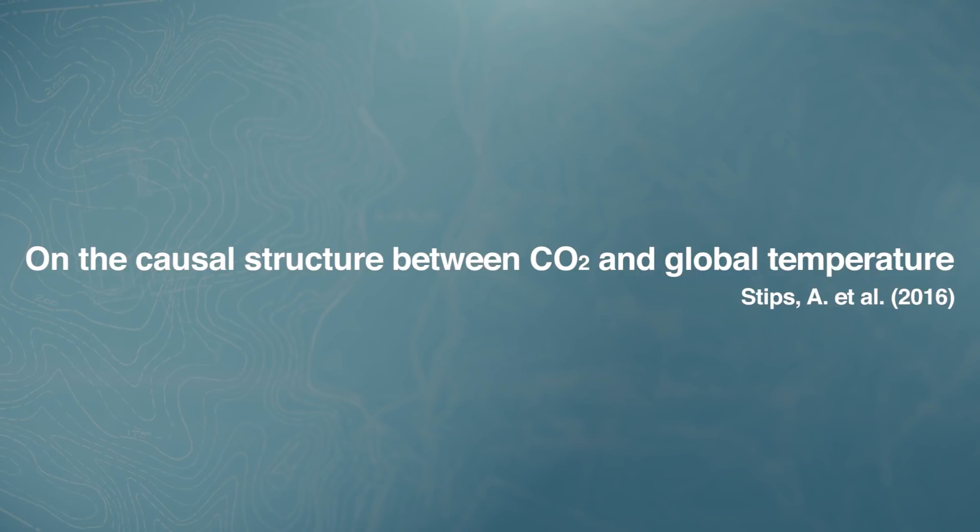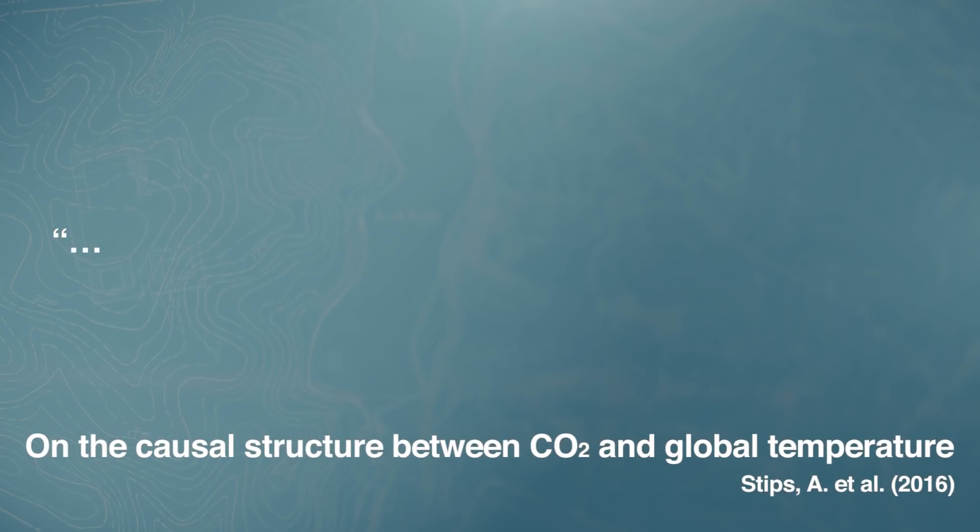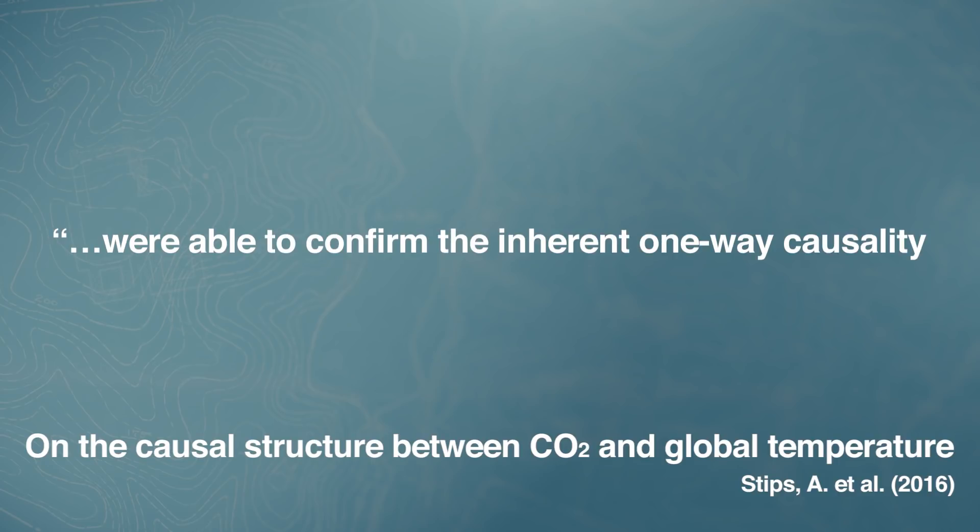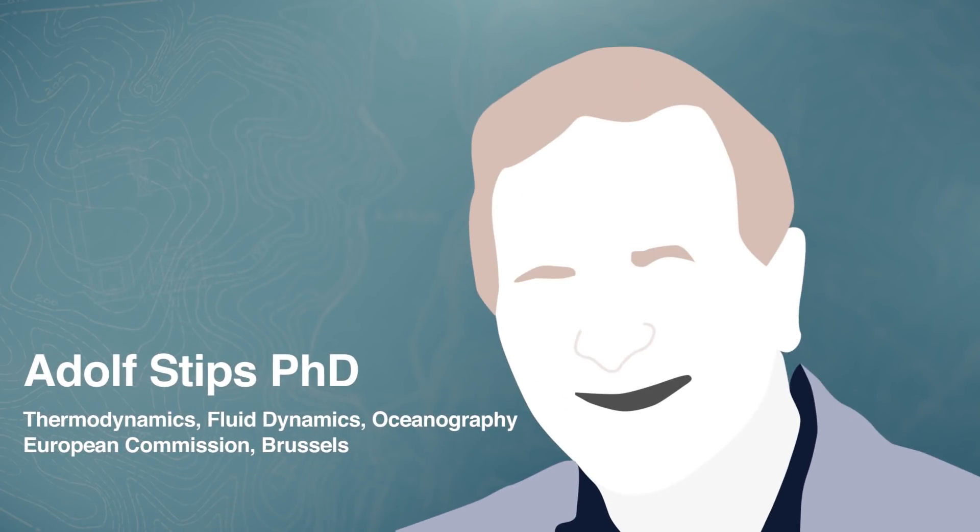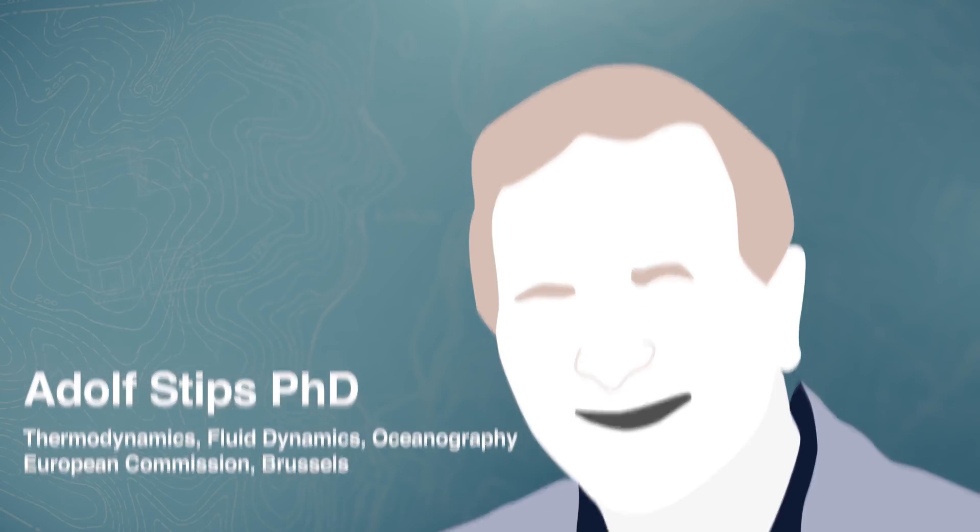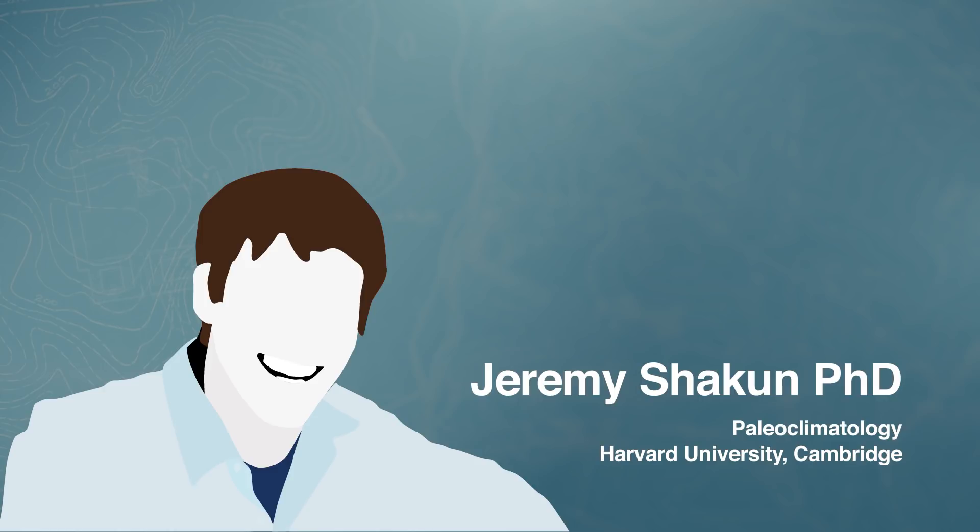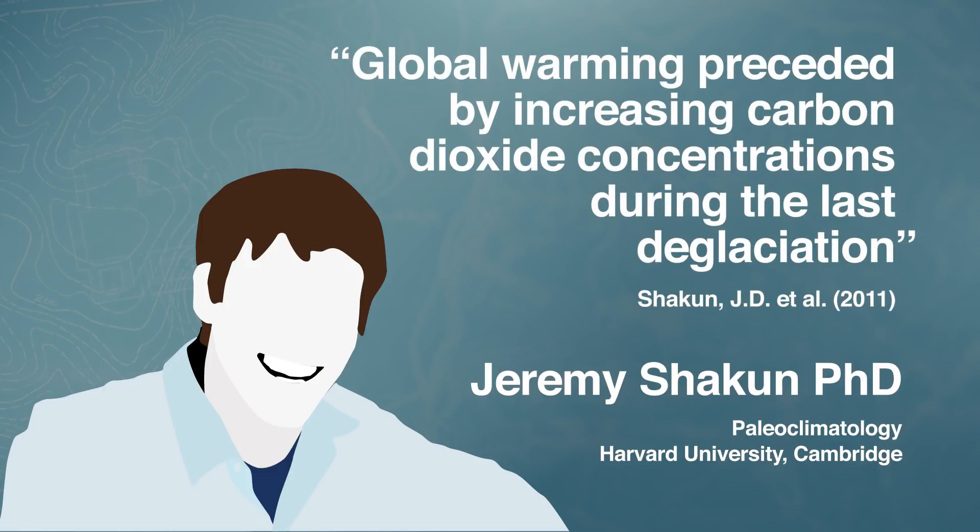So, is there a causation argument when looking at the correlation of temperature and CO2? One of the more recent peer-reviewed journals on this topic, titled On the Causal Structure between CO2 and Global Temperature, concluded that scientists were able to confirm the inherent one-way causality between human activities and global warming. This journal was written by thermodynamics oceanography professor Dr. Adolf Stipps, who appears was funded by the European Commission. The conclusion that increased CO2 does in fact cause a global temperature increase is supported by another journal written by Harvard paleoclimatologist Dr. Jeremy Shacken, titled Global Warming Preceded by Increasing Carbon Dioxide Concentrations During the Last Deglaciation. Although by no means exhaustive, let us conclude for now that there is evidence of the global temperature increase as a result of increased CO2 in the atmosphere.